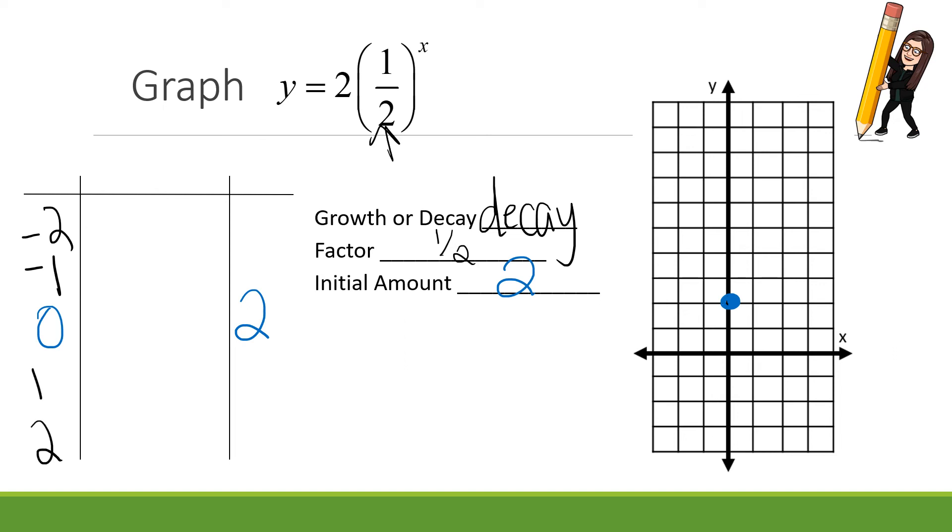Let's start off with 1. 2 times 1 half to the first. Well, anything to the first power is itself. So what's half of 2? 1. So I'm at 1, 1. That makes sense. It's decay. It's going down as I go to the right. Looking good.